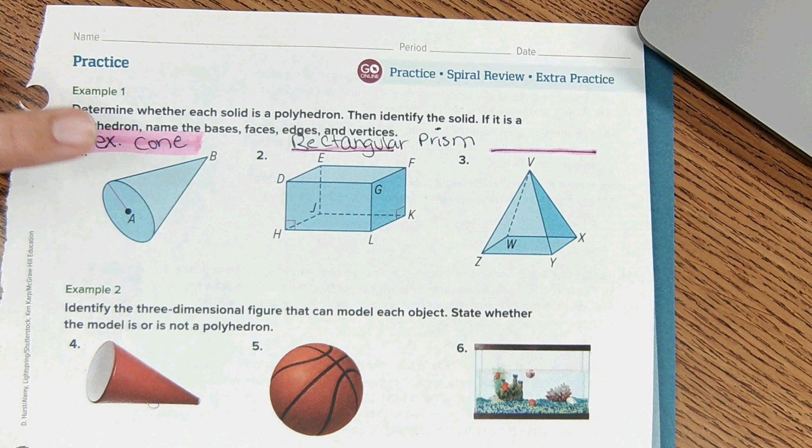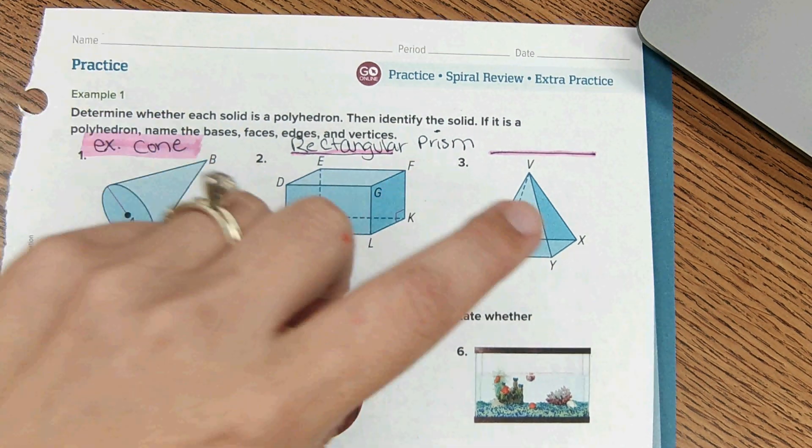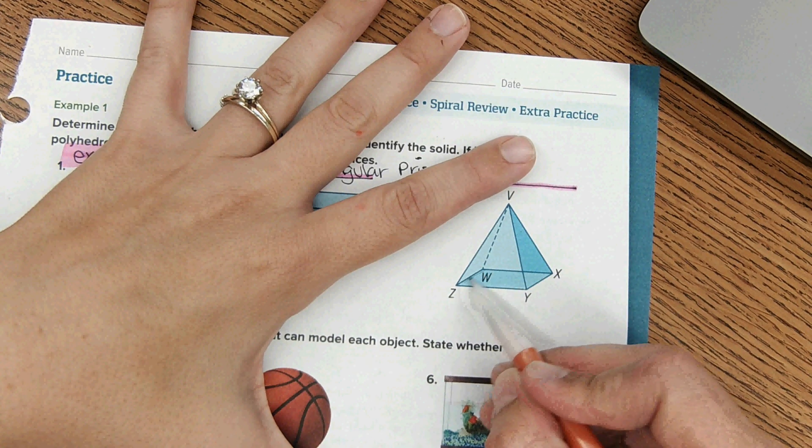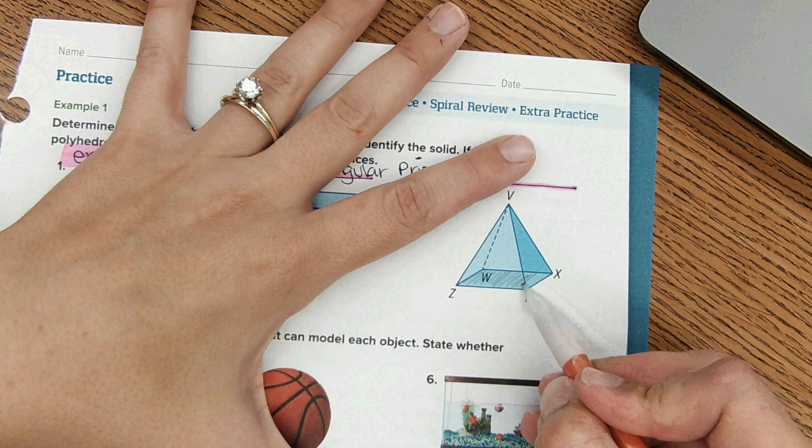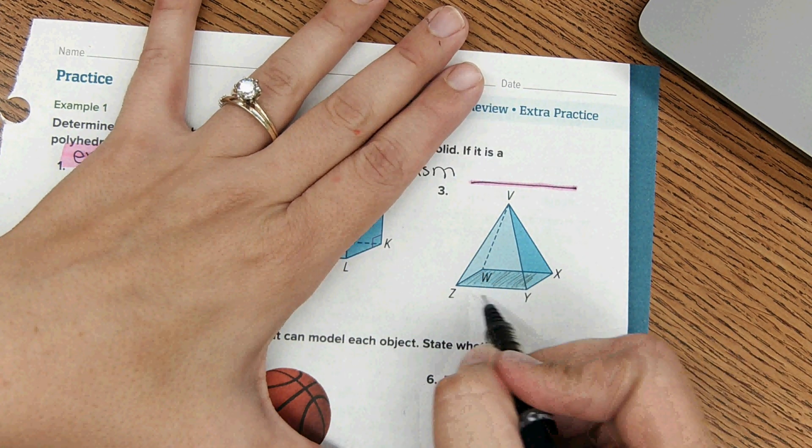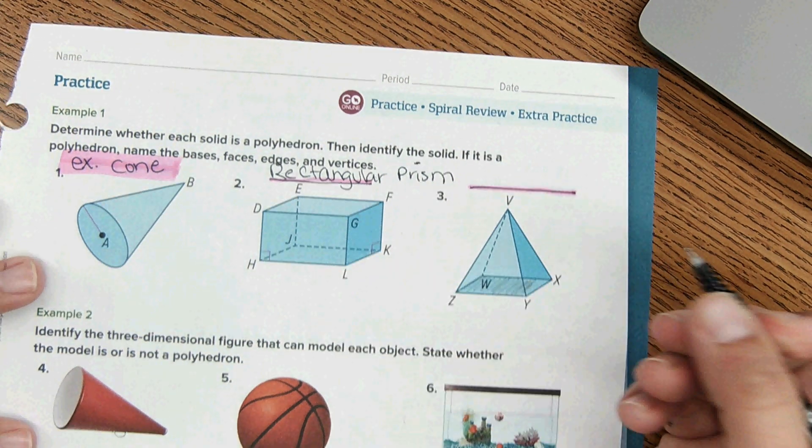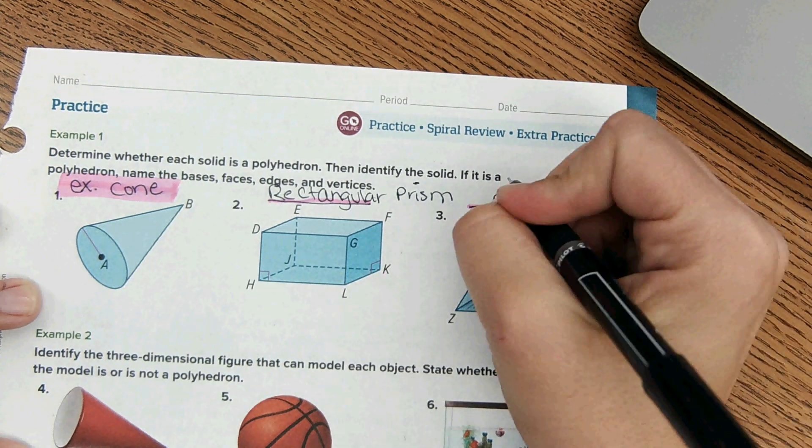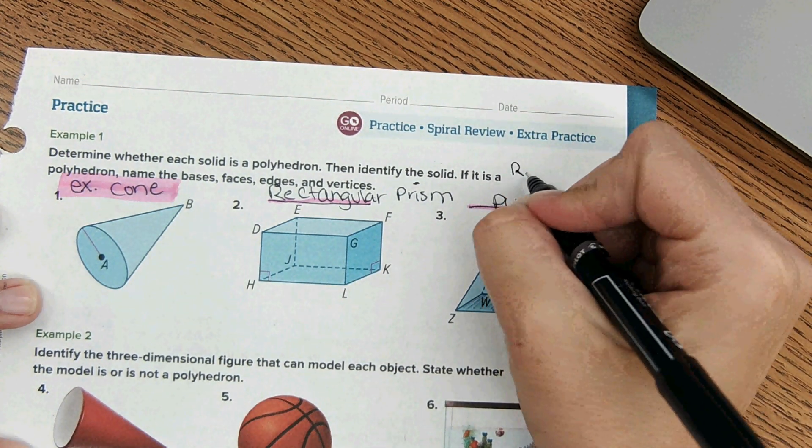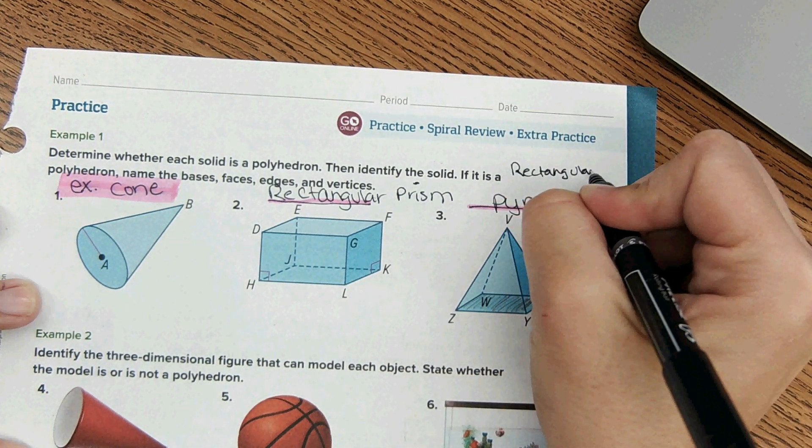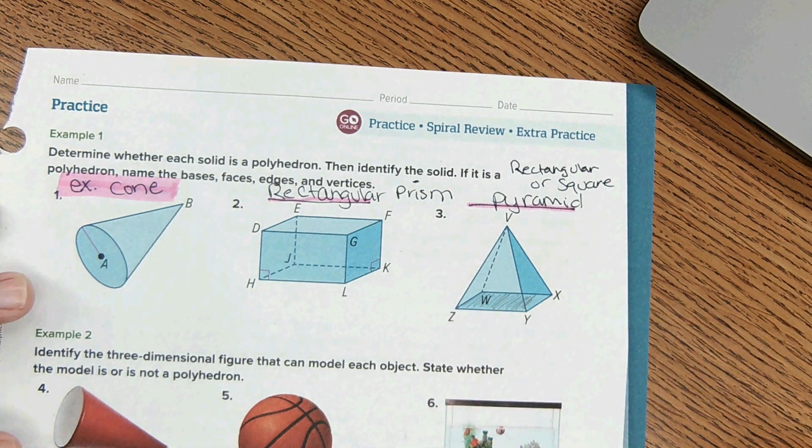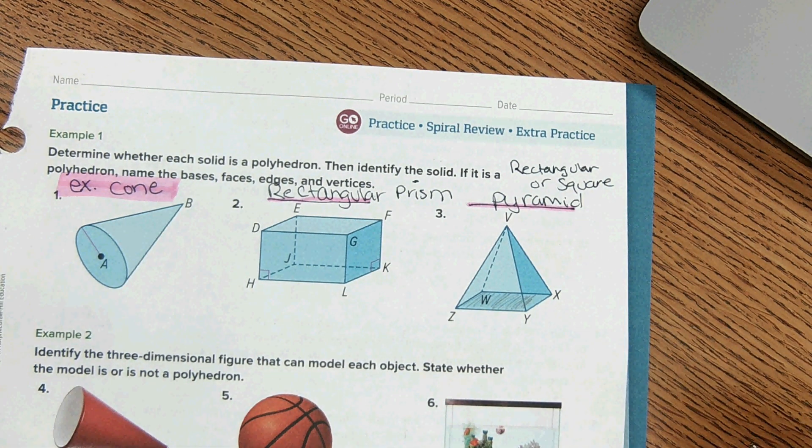Okay, so a cone, rectangular prism, this is a pyramid. A pyramid is identified by its base. That base is hard to tell whether it's a square or a rectangle, so it's definitely a pyramid - either a rectangular pyramid or a square pyramid depending on the dimensions of the base, which they didn't give us.